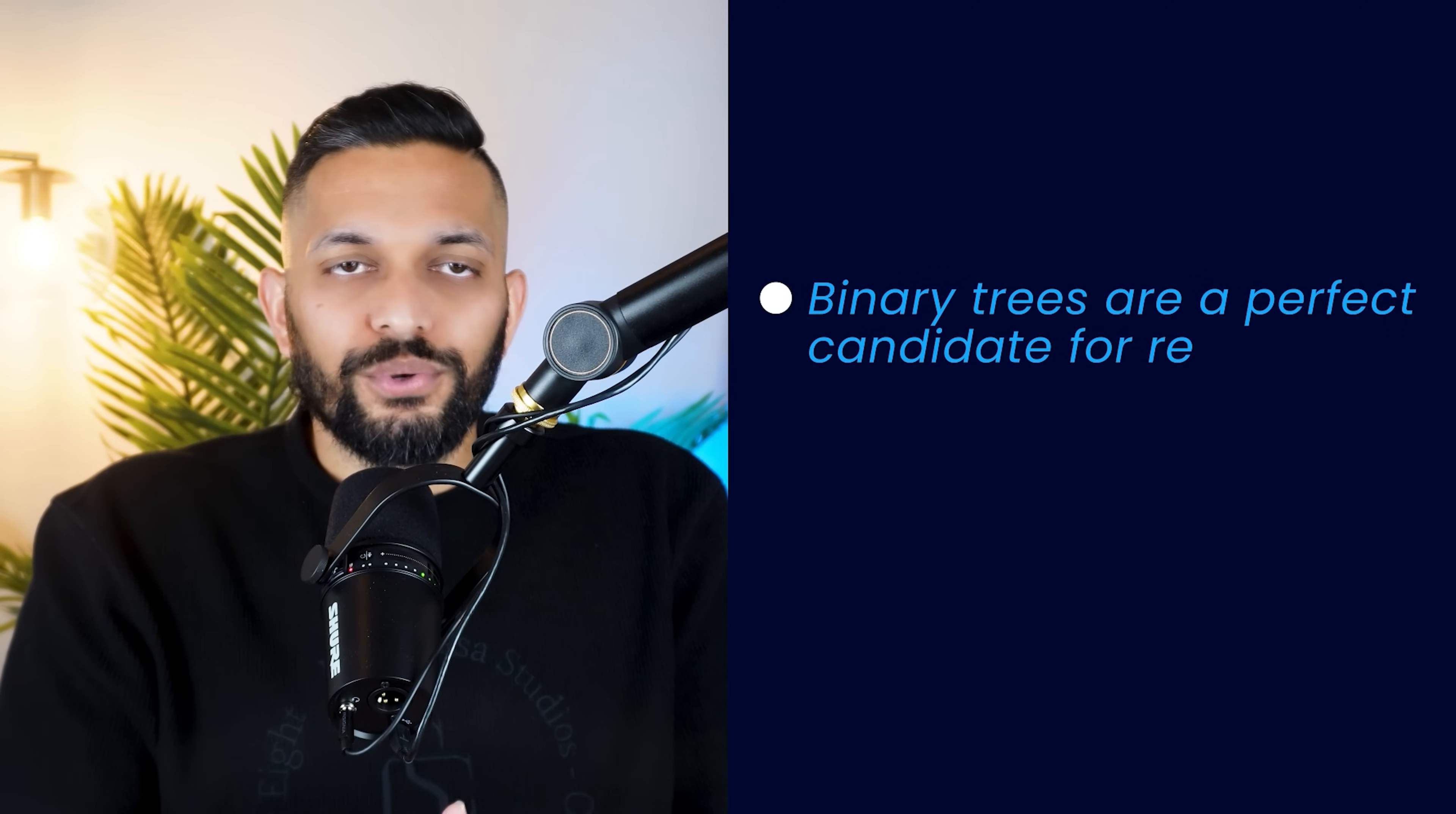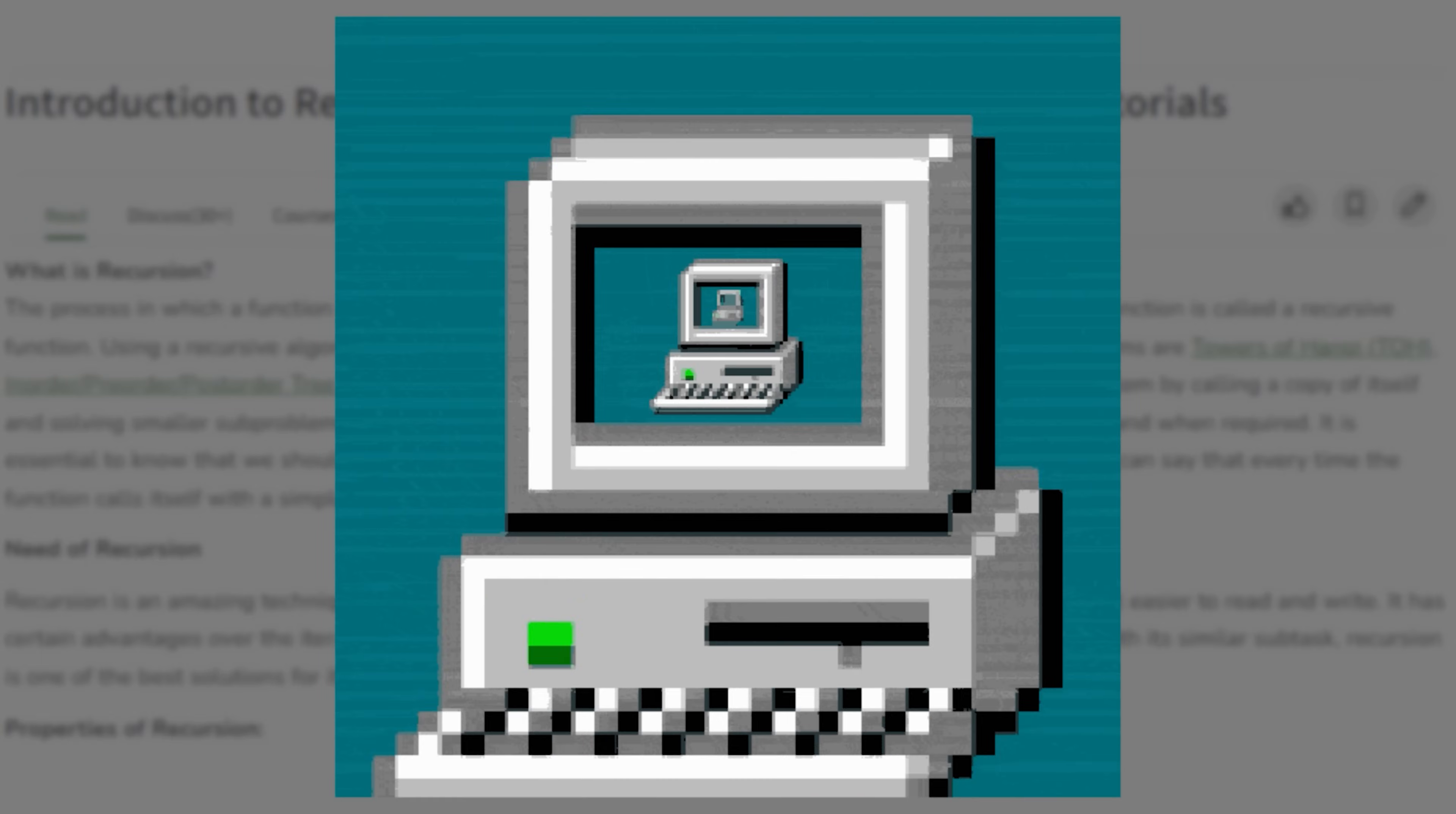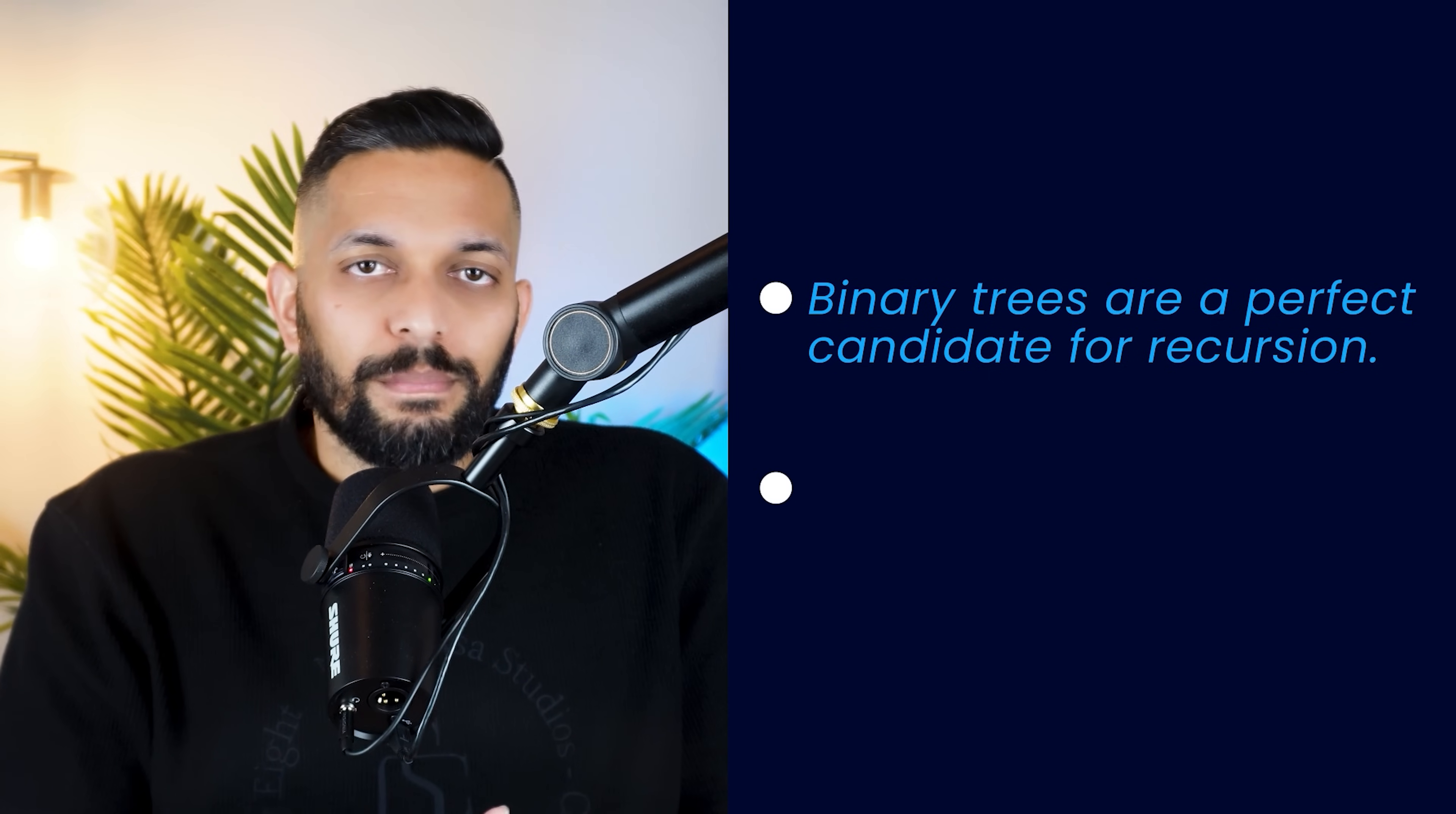But there are two important things that you need to know about binary trees. Number 1. Binary trees are perfect candidates to use recursion. For those who don't know, in a recursive algorithm, a function calls itself with a smaller input value and uses the result to return its output. Most binary tree problems can be solved using recursion. Number 2.